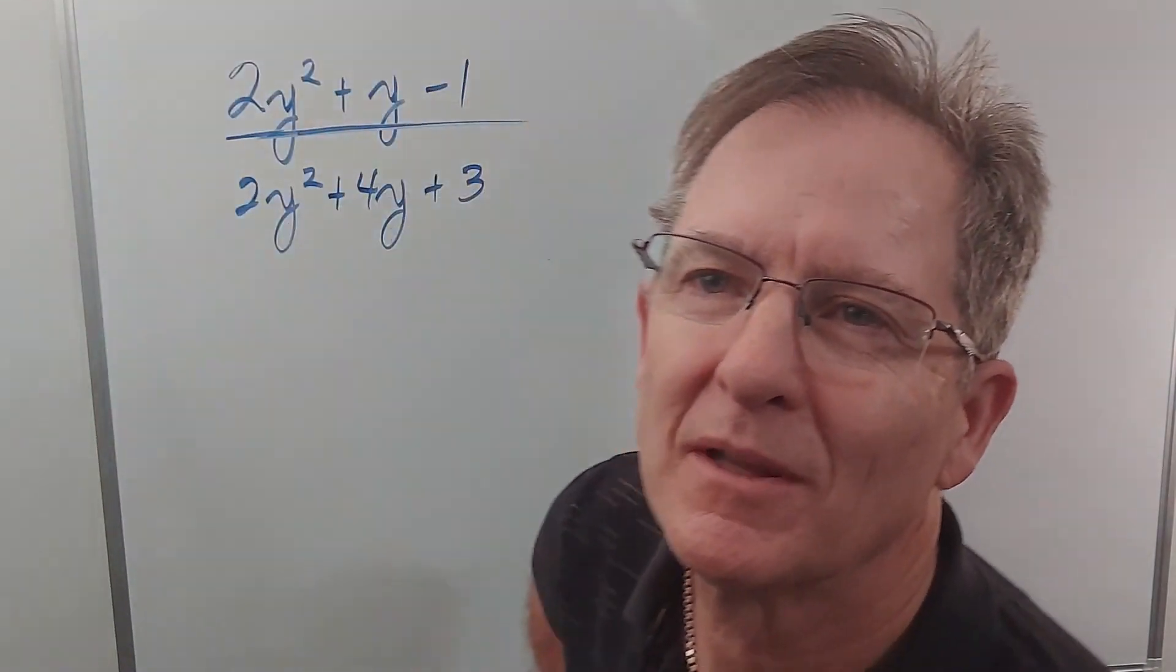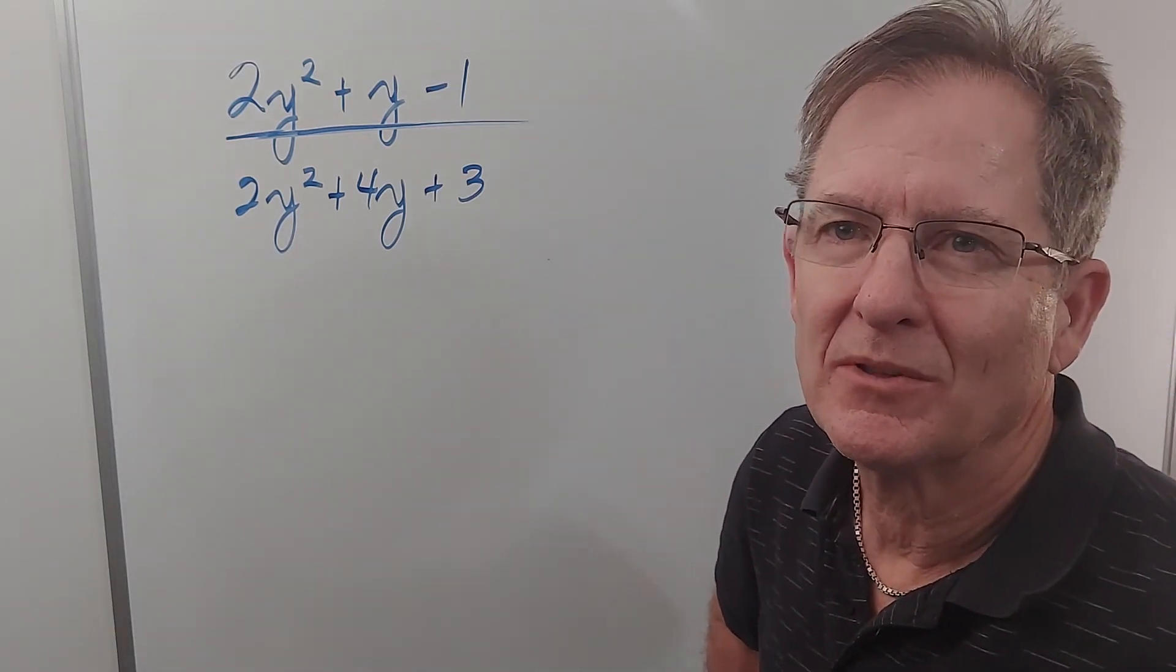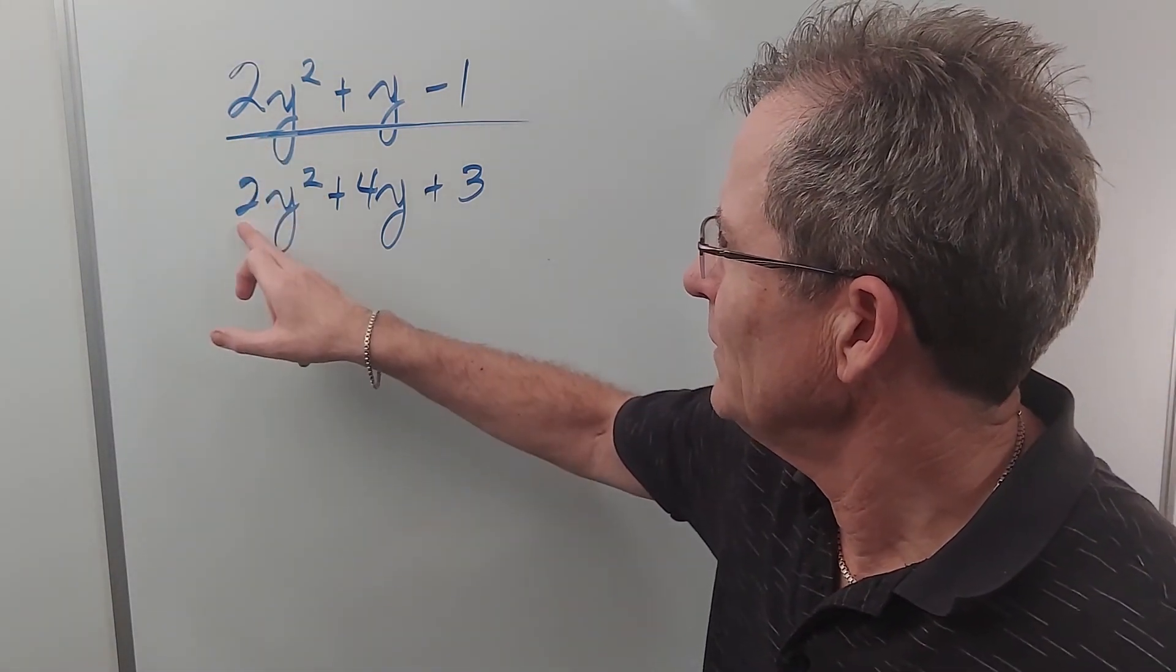Let's do one more example of a rational expression involving complex trinomials. They're complex because that's not a 1 there or there.